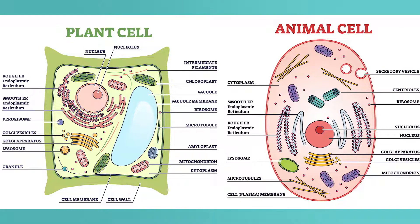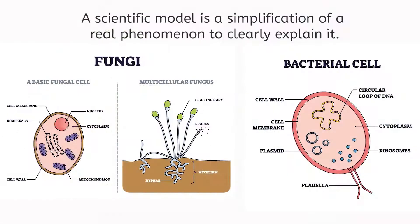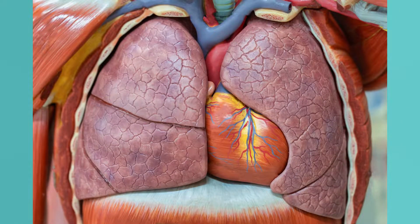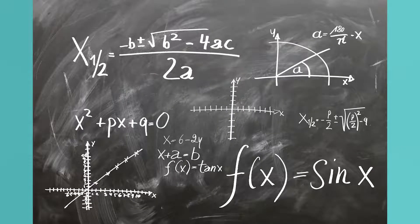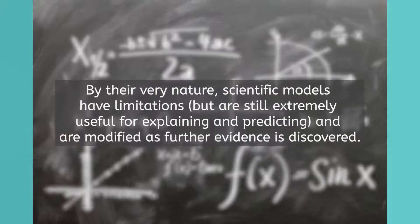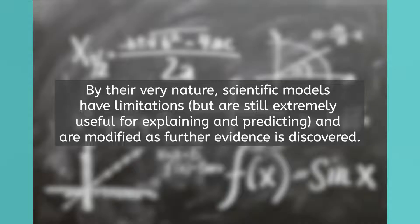Throughout this lesson, we've explored different types of cells, but we haven't looked at a lot of microscope images of cells — we've looked at models of these cells. A scientific model is a simplification of a real phenomenon to clearly explain it. A scientific model can be a drawing or a diagram like the ones we've used today, a 3D representation, a computer simulation, a mathematical representation or description, or even an analogy. The virtual light and electron microscopes from previous lessons are both models, too. By their very nature, scientific models have limitations, but are still extremely useful for explaining and predicting, and are modified as further evidence is discovered.